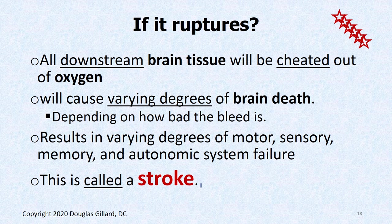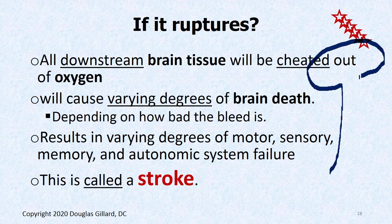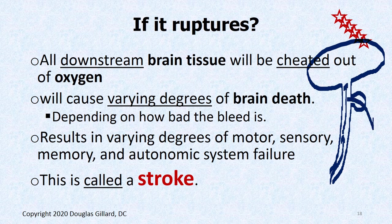If it ruptures, think of a river — if you carve a big hole out of a river, you siphon water off and the flow downstream becomes a stream. That's what a burst aneurysm is. Blood leaks out instead of going to the brain, causing downstream ischemia that kills brain tissue — the definition of a stroke. You get different degrees of motor, sensory, memory, and autonomic problems.